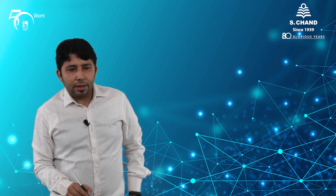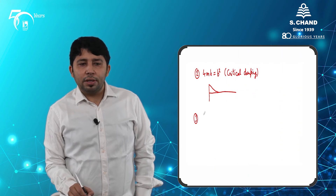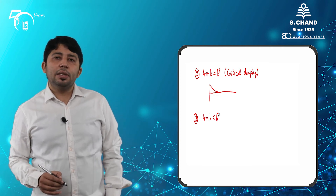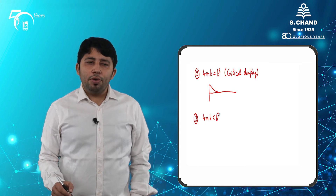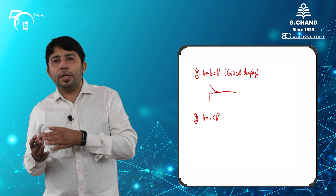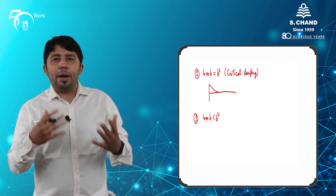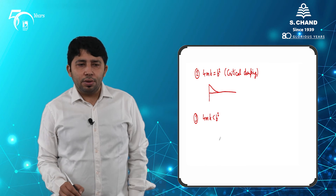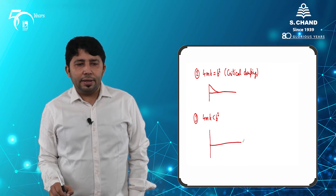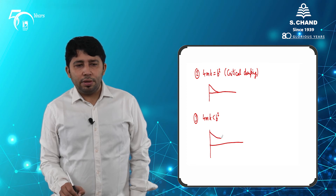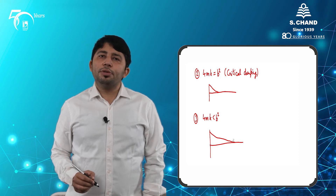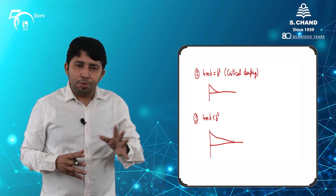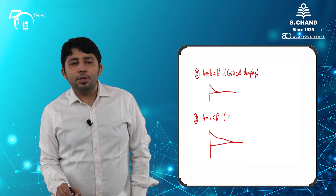In Case 3, when 4mk < b², the quantity under the square root is negative. The iota multiplies with iota, producing a real exponential with a negative parameter, and the system takes a much longer time to return to its mean position. This is known as heavy damping.